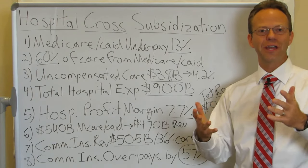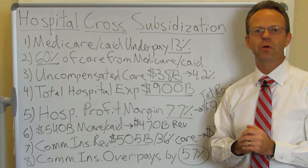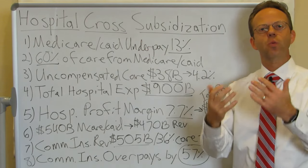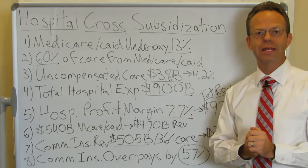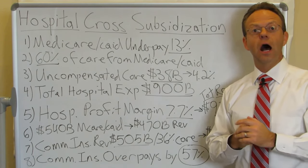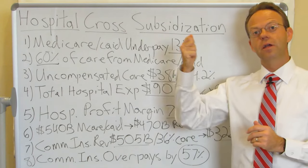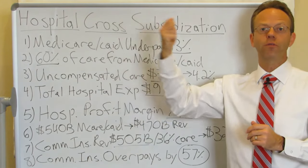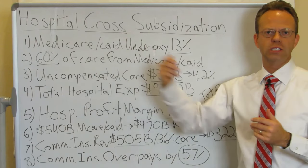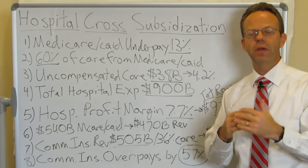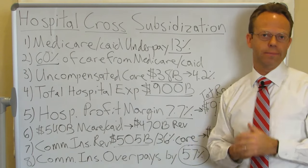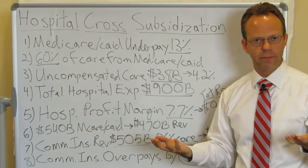Hello, this is Dr. Eric Bricker, and thank you for watching A Healthcare Z. Today we're going to be discussing hospital cross-subsidization. It's a well-known fact that Medicare and Medicaid under-reimburse hospital systems for the care they provide, and hospital systems then have commercial insurance patients overpay for the care provided to them. That's where you get the cross-subsidization — subsidizing the underpayment by Medicare and Medicaid by having commercial insurance overpay. That's just how hospital finance in America works.